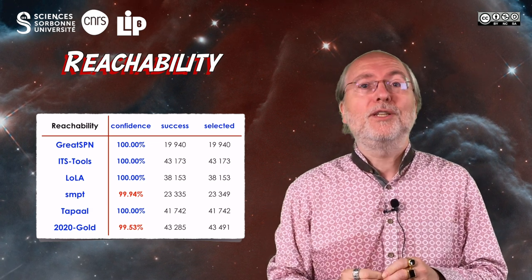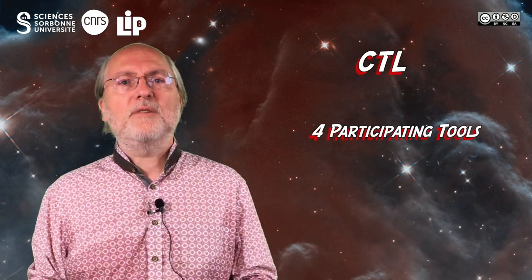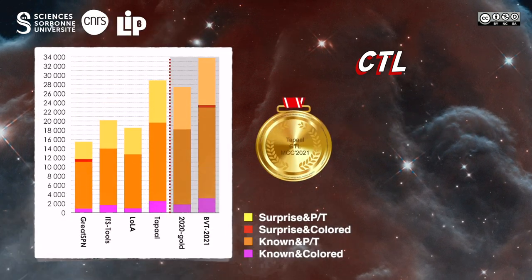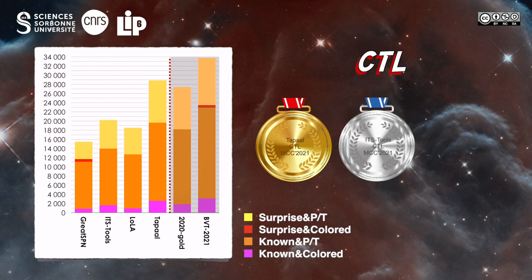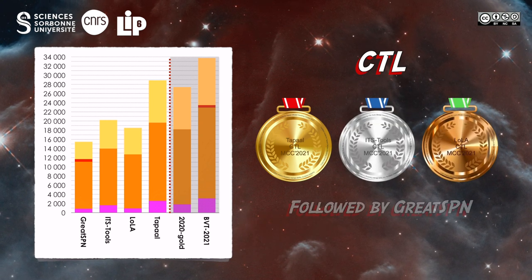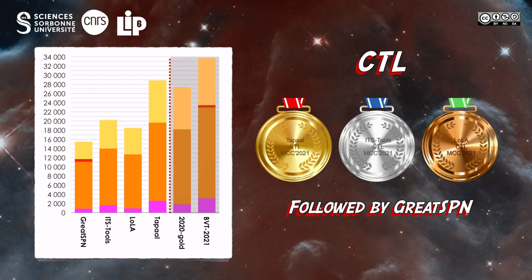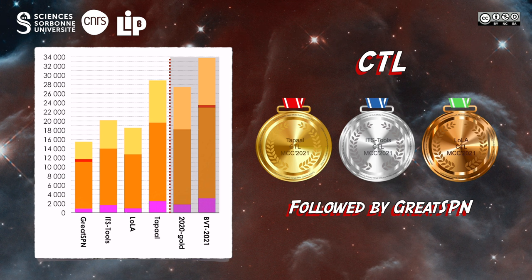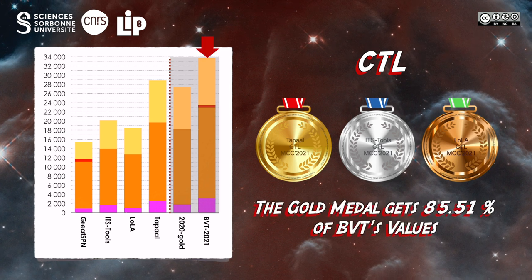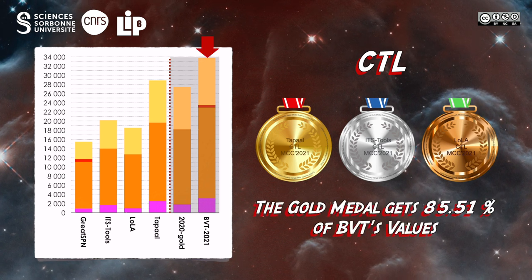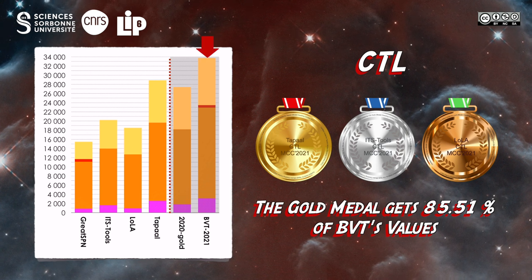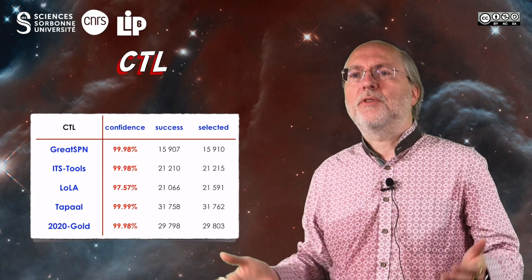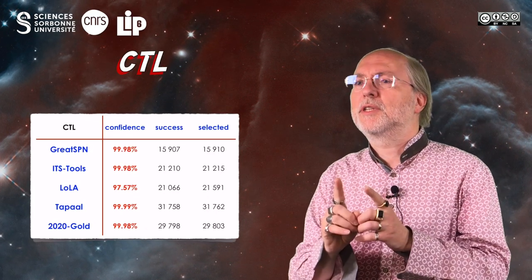For the CTL family of examinations, four tools did participate. The gold medal goes to TAPAL, then ITS-Tools grabs the silver one, and Lola gets the bronze medal, followed by GreatSPN. The 2020 gold medal was TAPAL and would have been ranked second. BVT is 15% above the winner, showing that other competitors were able to capture a number of values the winner this year was not able to compute. No tool reached 100% confidence rate, even if the average remained close to 100%.